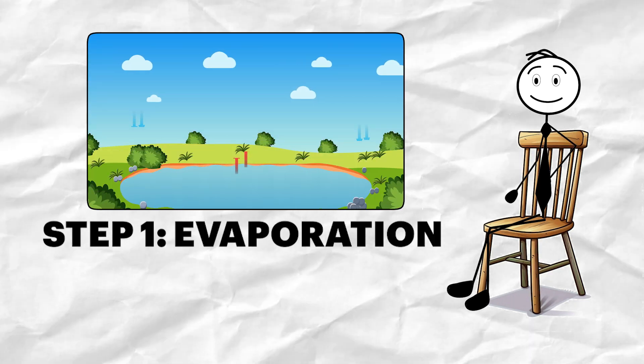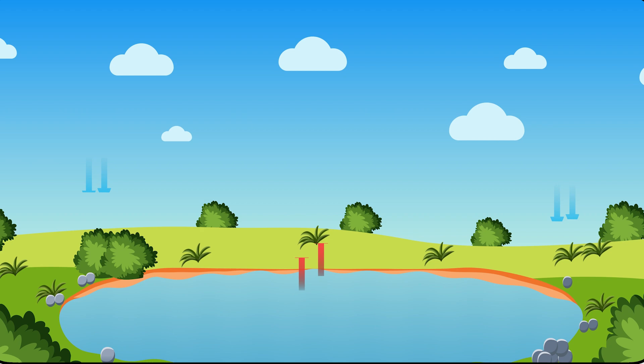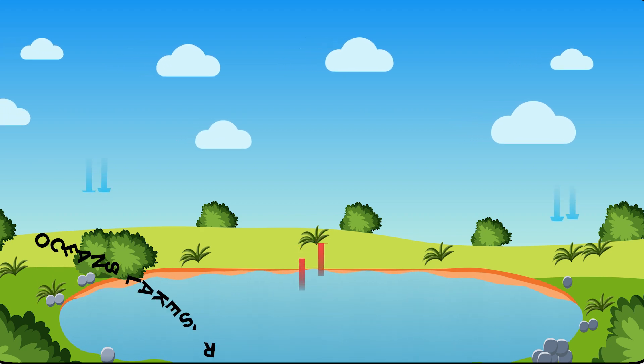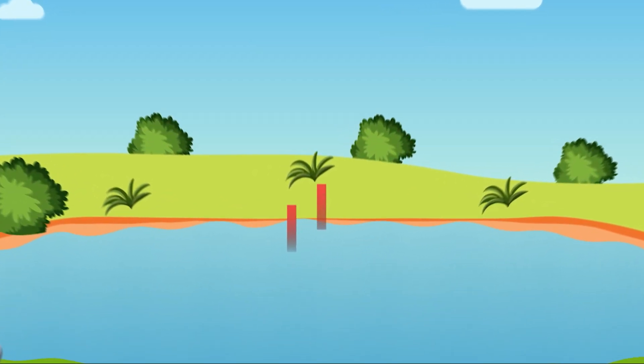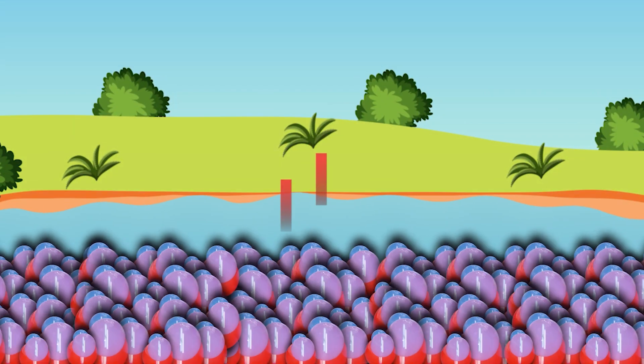Step 1. Evaporation. This is where it all begins. Sunlight heats the Earth, but not evenly. Oceans, lakes, rivers, even puddles begin to warm. Water molecules get excited and break free. They evaporate into the air.